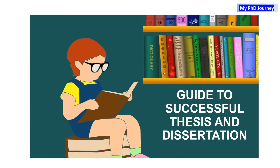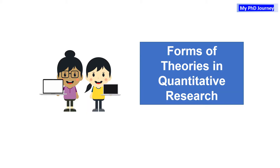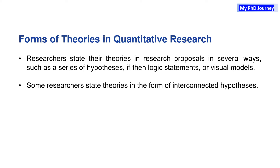This is a guide to successful thesis and dissertation, focusing on forms of theories in quantitative research. Researchers state their theories in research proposals in several ways, such as a series of hypotheses, if-then logic statements, or visual models. Some researchers state theories in the form of interconnected hypotheses.